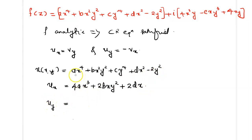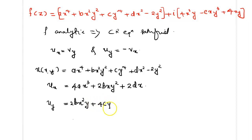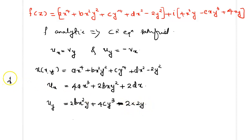uy is equal to u differentiated with respect to y, treating x as constant. ax raised to 4 gives 0; bx squared y squared differentiates to 2bx squared y; cy raised to 4 gives 4cy cubed; dx squared gives 0; minus 2y squared gives minus 4y. So uy equals 2bx squared y plus 4cy cubed minus 4y.